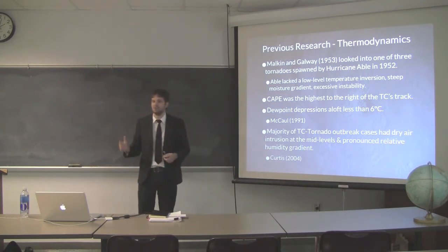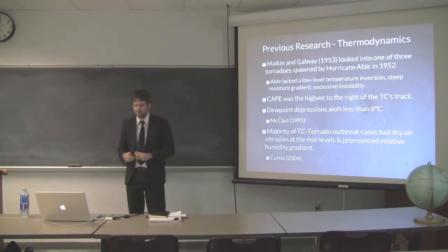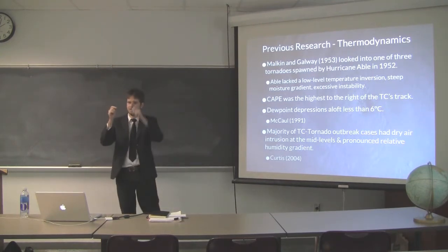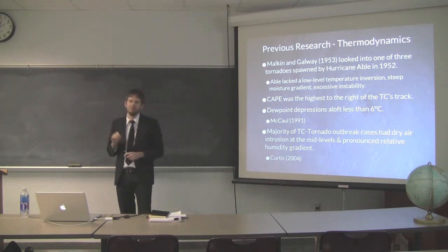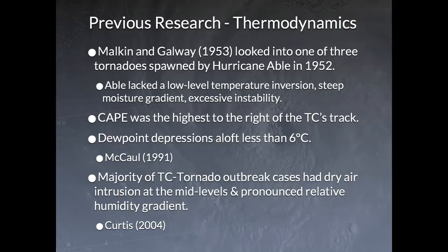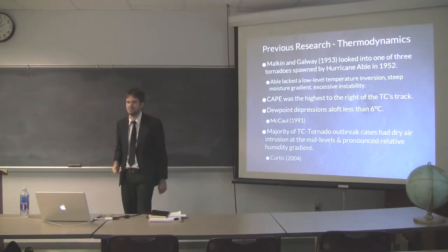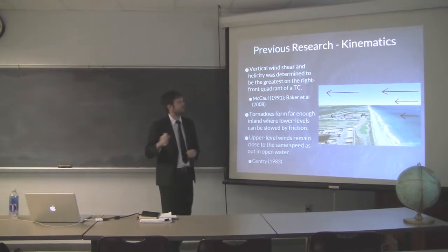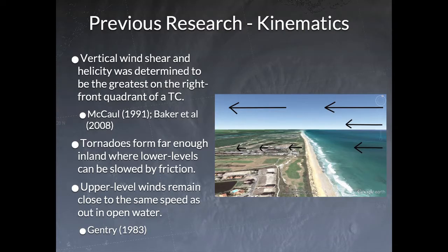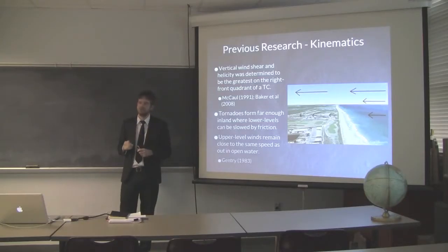That paper found that Able lacked low-level temperature inversion, steep moisture gradient, and excessive instability — very atypical compared to what you'd see in the Midwest. Convective available potential energy was also highest to the right of the tropical cyclone. Dewpoint depressions were usually less than 6 degrees Celsius. However, about 15 years later, Curtis found that majority tornado outbreak cases had dry air intrusion, pronounced relative humidity gradient, and greater dewpoint depression, sometimes as much as 10 degrees Celsius. Vertical wind shear and helicity were determined to be highest in the right front quadrant.